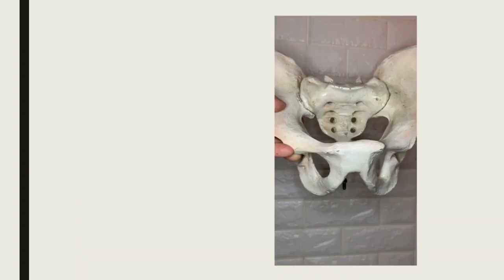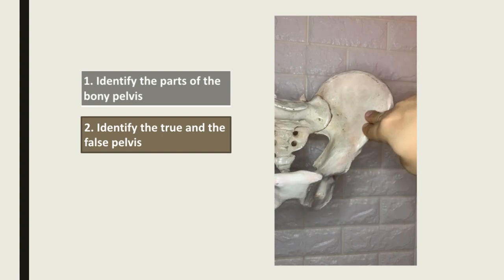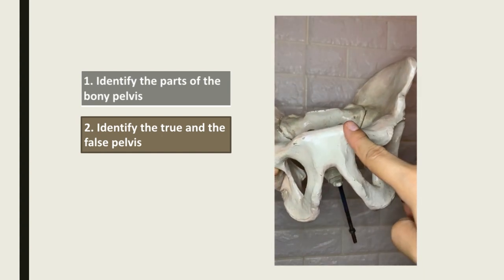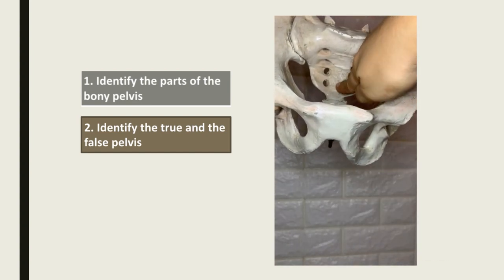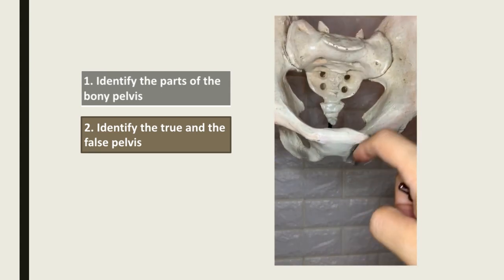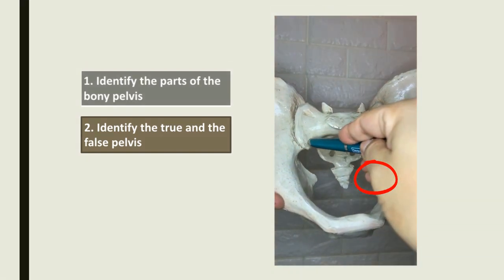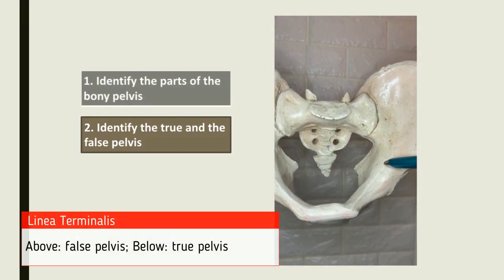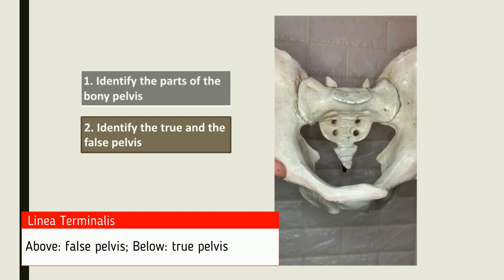We have to identify the bony parts of the pelvis, and identify the true pelvis and the false pelvis. Here we have the ilium, the ischium, the pubis, the symphysis pubis, the sacrum, and the upper border — the sacral promontory — the coccyx or tailbone, and the iliac spines. We then trace the linea terminalis. Above the linea terminalis is the false pelvis, and below it is the true pelvis.